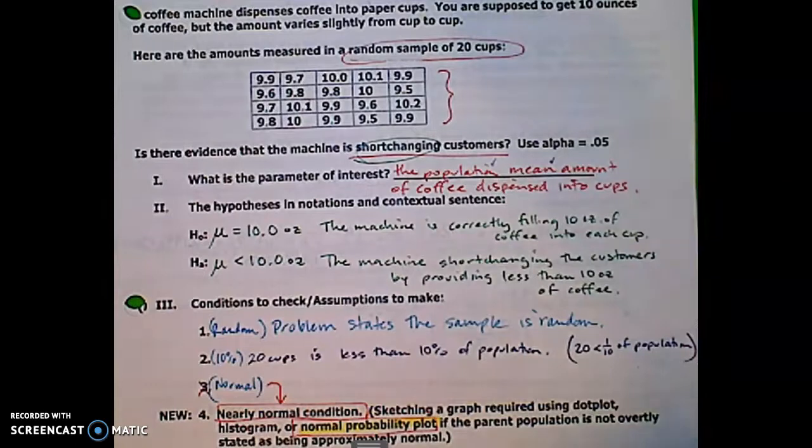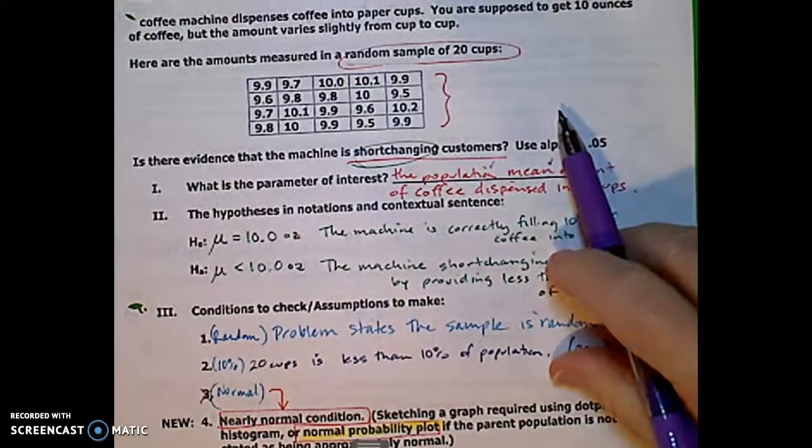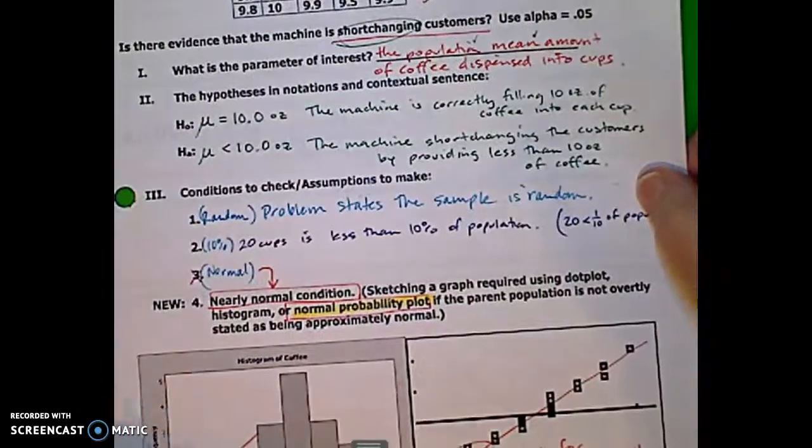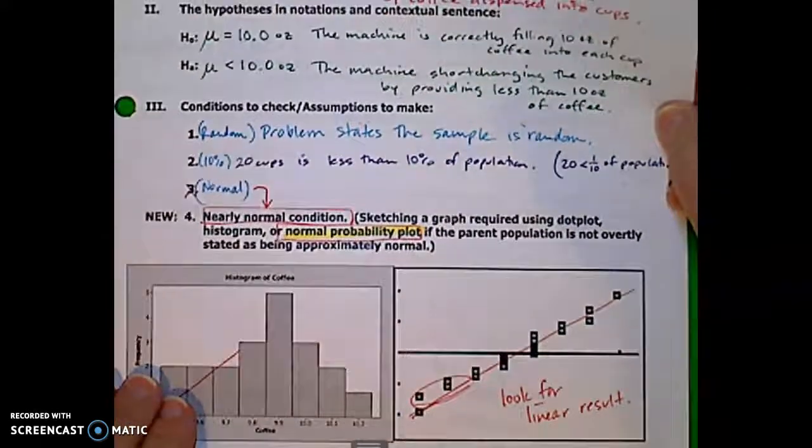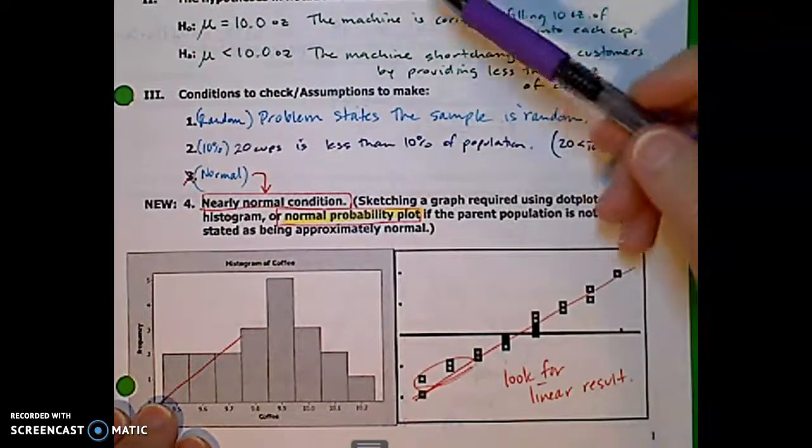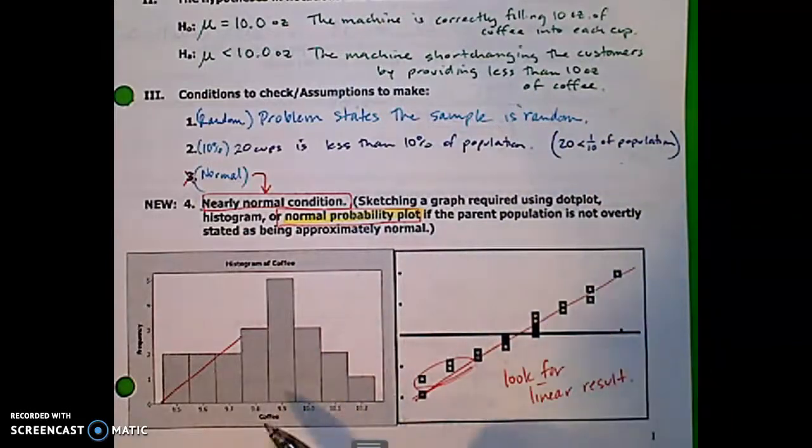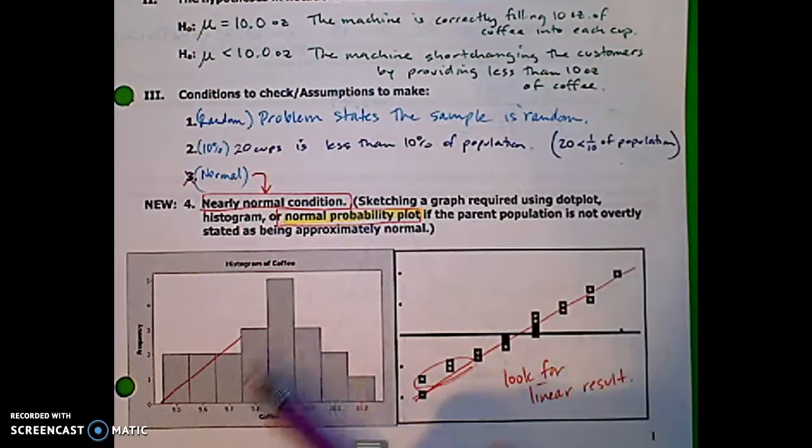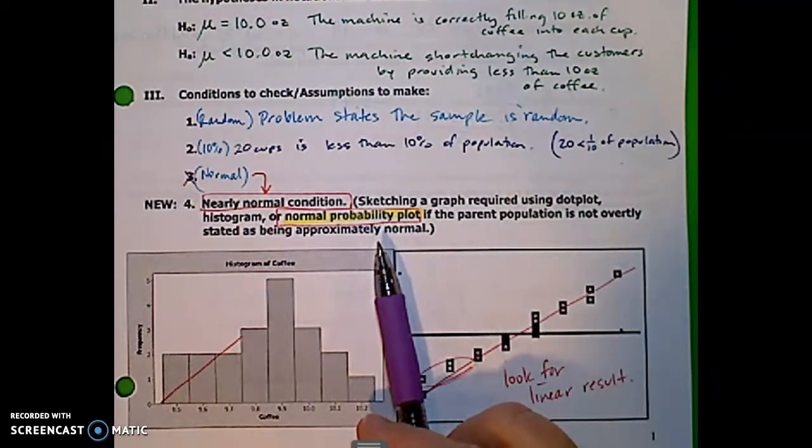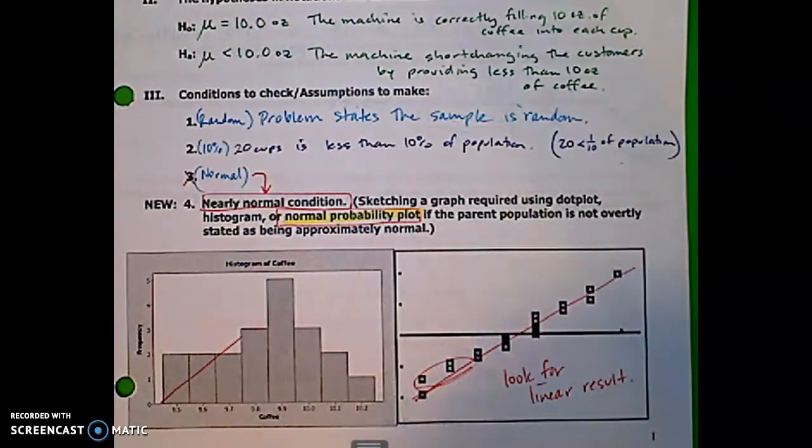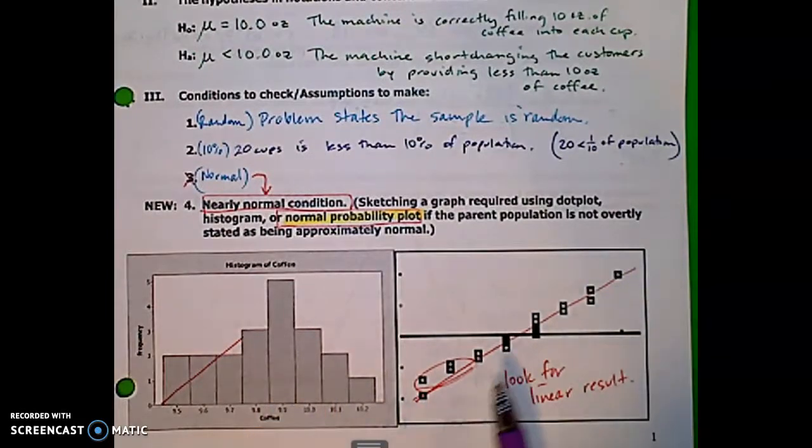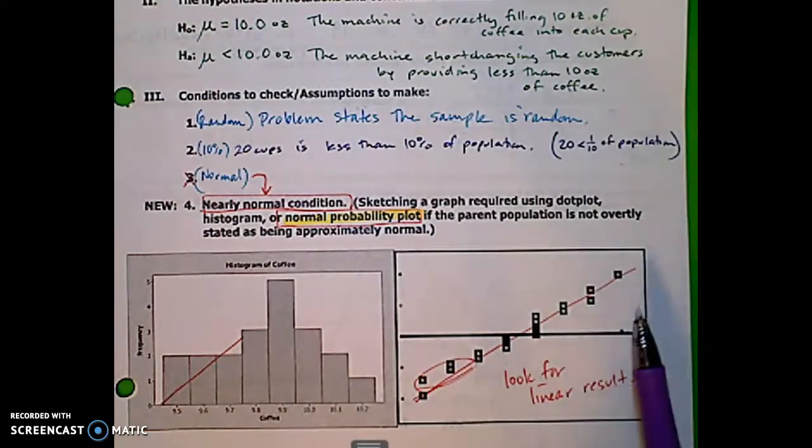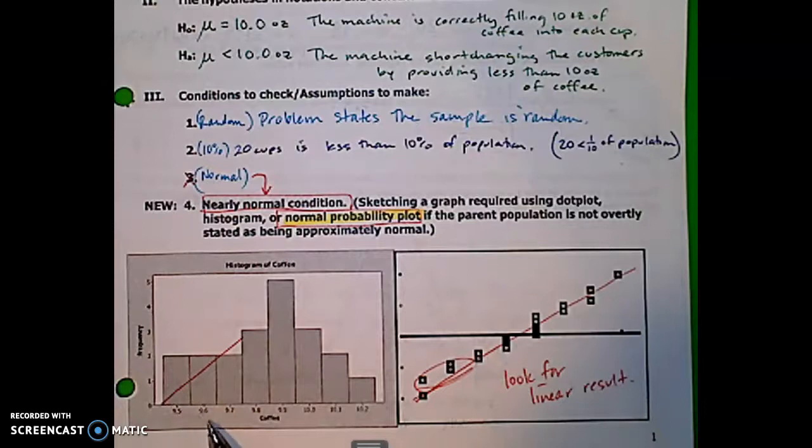So our next condition is the normal condition. Is the distribution normal? And there's a new name for it here. It's called the nearly normal condition is what we're looking for. Is the distribution nearly normal? Obviously, we don't have the distribution of the population. All we have is this sample of 20 cups of coffee. So if we graph this, we can graph a histogram and we can kind of eyeball it and see if it looks like it's approximately unimodal and approximately symmetric. That will suffice. But we actually have a new one called the normal probability plot. If we don't know already that the sample is approximately normal or that the population is approximately normal, we need to look at these two things together to help us decide with confidence that it's okay to move on.